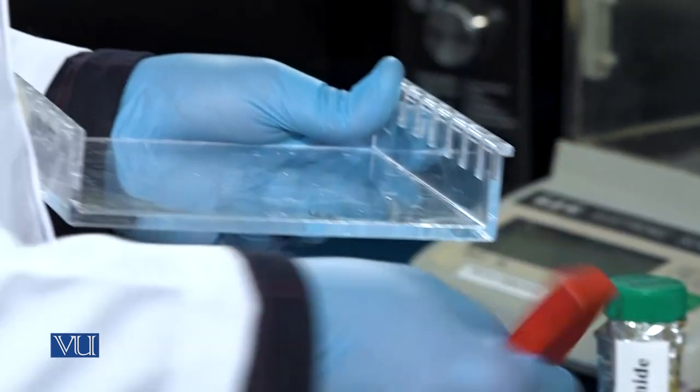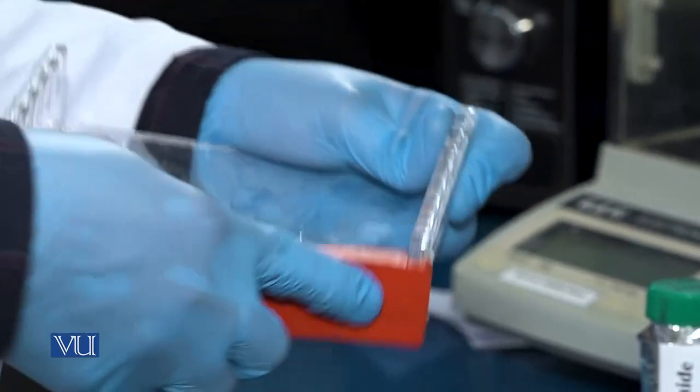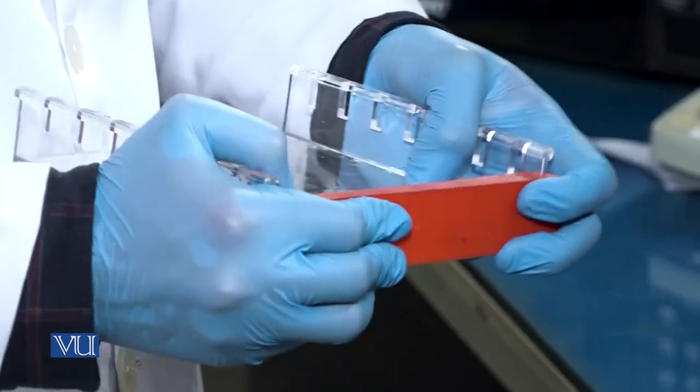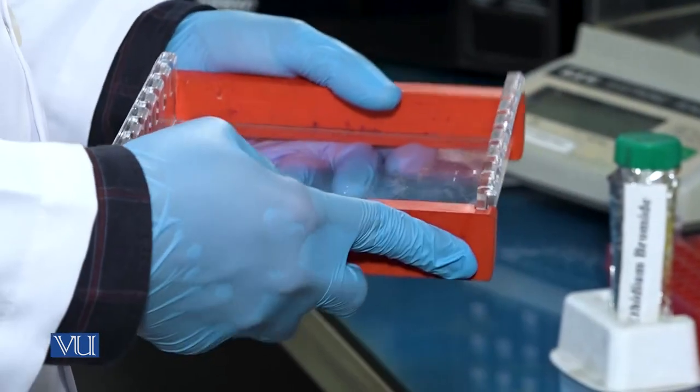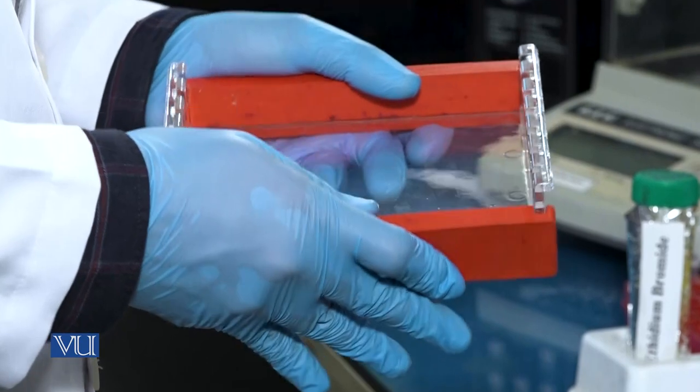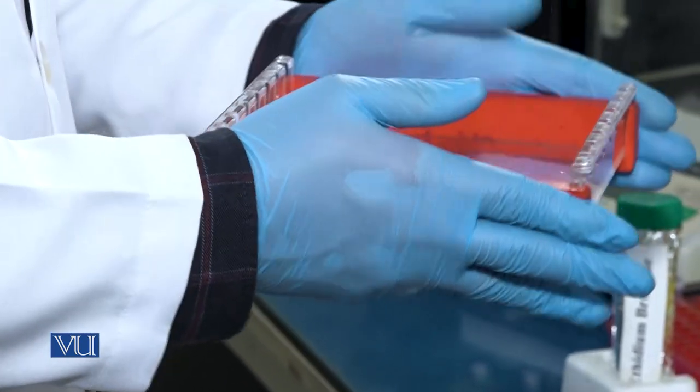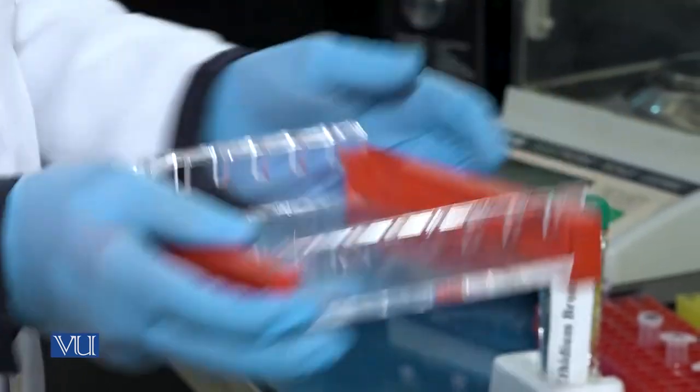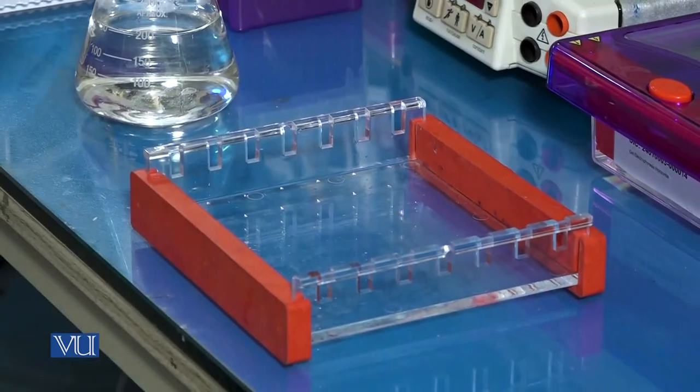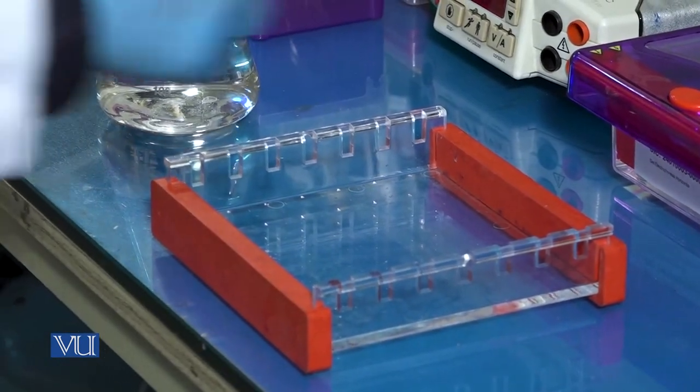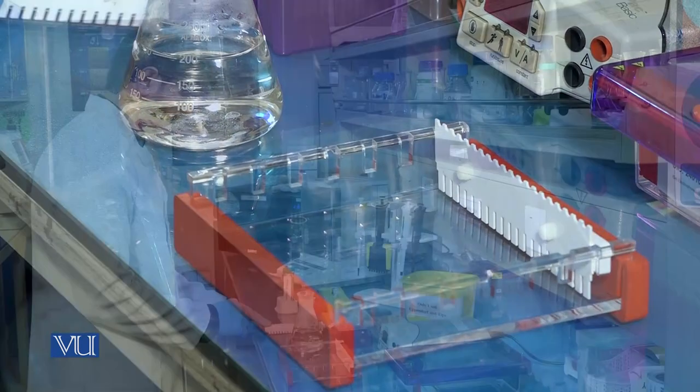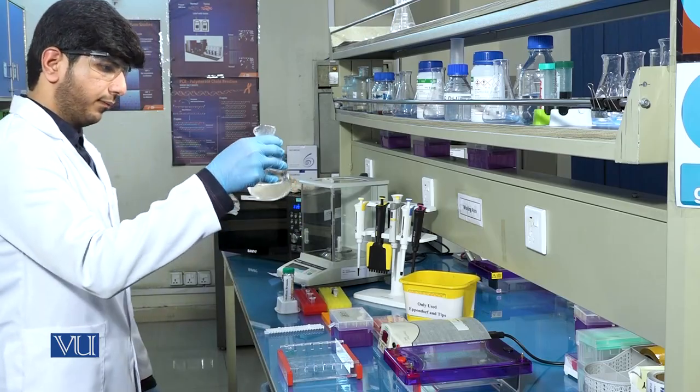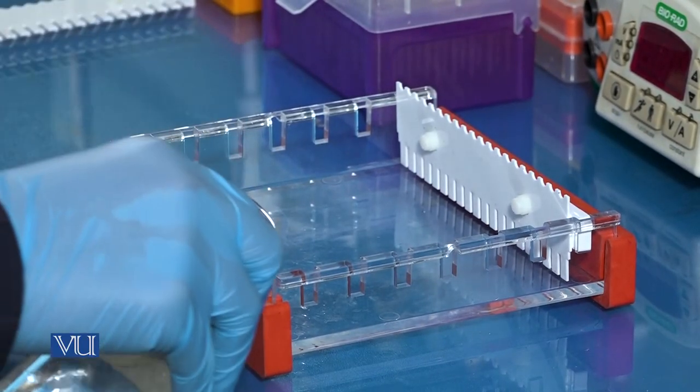After adding the ethidium bromide, now assemble the gel caster to pour the gel. Place comb in it to make wells. Now pour the gel in the caster carefully.